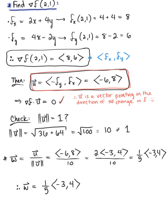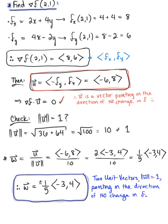This is not an exclusive solution — the scalar multiple could also be negative. So we can write plus or minus one-fifth times ⟨−3, 4⟩ to represent both possible unit vectors pointing in the direction of no change in the function along the level curve.